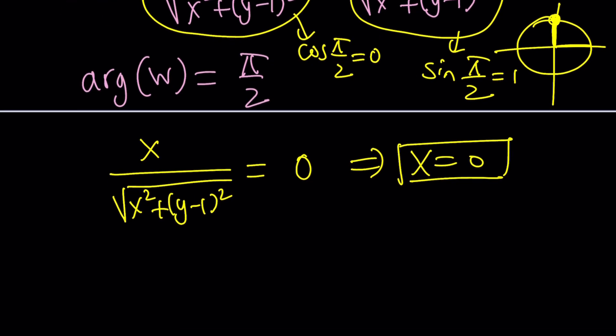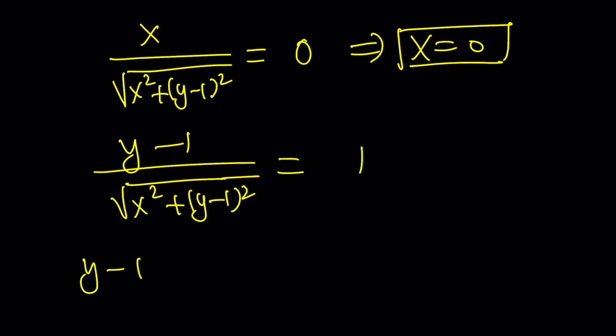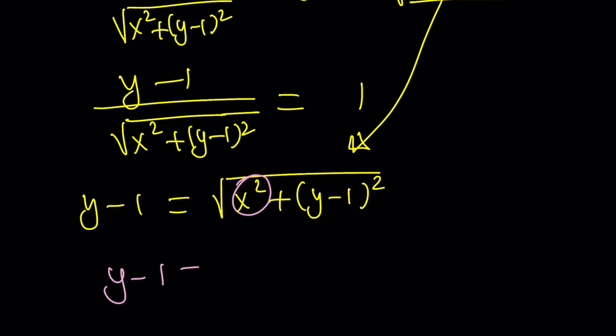What about the imaginary part? Imaginary part will be very interesting, because it's equal to 1. What do you make of this? Well, it just means that y minus 1 is equal to this, but at the same time, I know that x is 0. That makes things a lot easier. If x is 0, plug it in, you're going to get y minus 1 equals the square root of (y minus 1) squared, which is equal to y minus 1. These two cancel out. Uh-oh, I got an identity, y minus 1 equals y minus 1. Don't do that, because the square root of a squared is not always a. It is the absolute value of a.